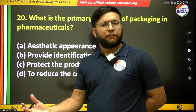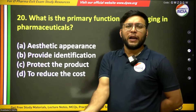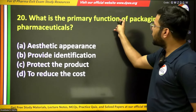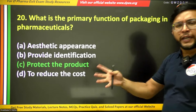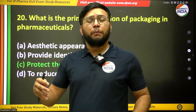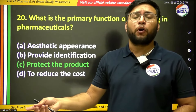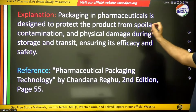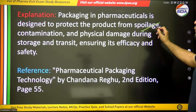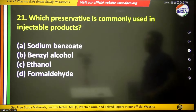The twentieth question: what is the primary function of packaging in pharmaceuticals? Packaging in pharmaceuticals is designed to protect the product from spoilage, contamination, and degradation. Without proper packaging, the product would degrade or break.